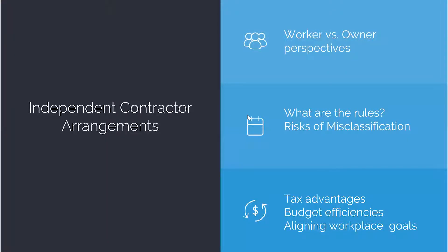We're going to touch on perspectives from both the worker and the owner with independent contractor arrangements — what are the rules or guidelines, how are these things generally classified, and what are the risks of misclassifying them. The risk-reward picture is the backdrop, including tax advantages as context. Overall, we'll look at the efficiencies an owner should be trying to achieve, which really boils down to aligning worker and owner goals in a logical way, particularly with compensation.